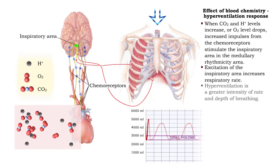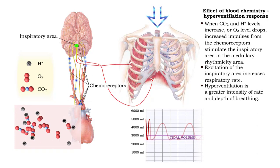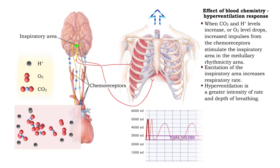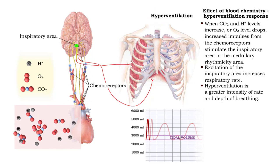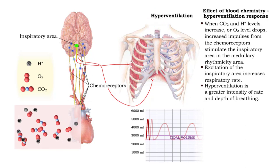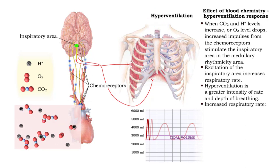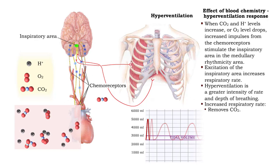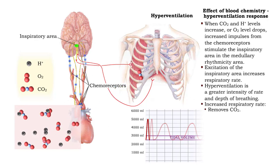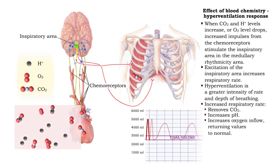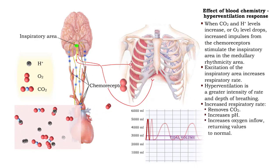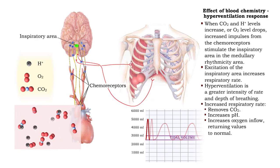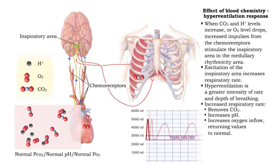A greater intensity of rate and depth of breathing is known as hyperventilation. Increased respiratory rate removes carbon dioxide, thereby increasing pH, and increases oxygen inflow, returning values to normal.